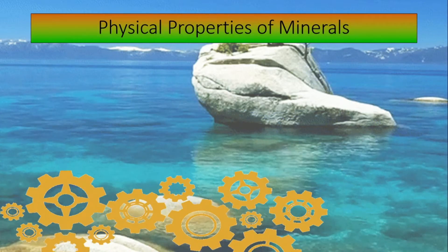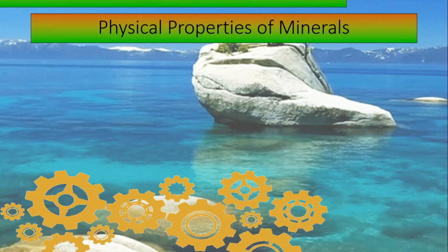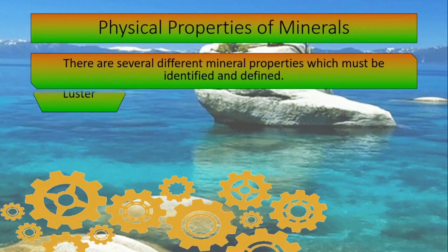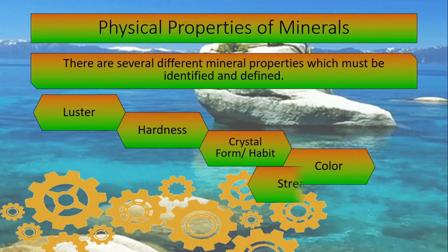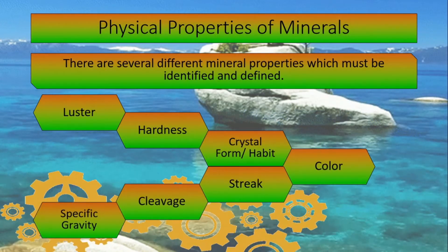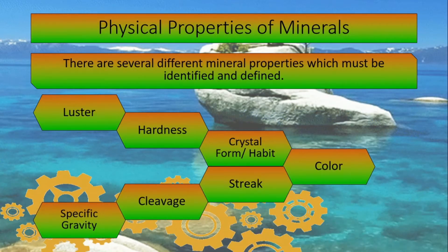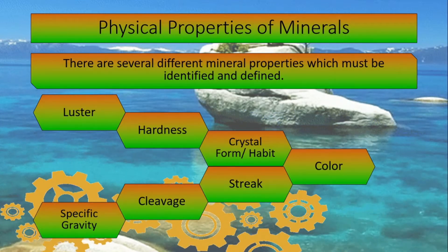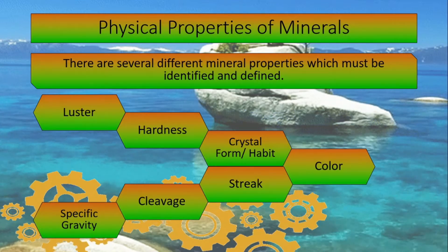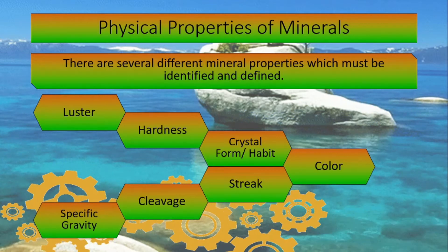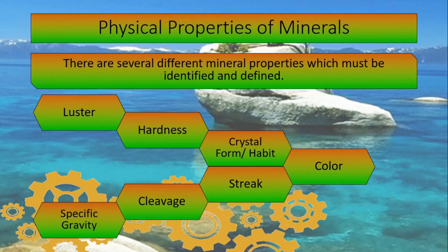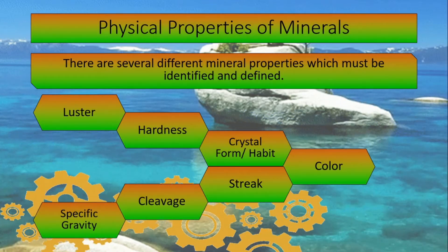Physical properties of minerals. There are several different mineral properties which must be identified and defined. These seven physical properties of minerals include luster, hardness, crystal form or habit, color, streak, cleavage, and specific gravity.